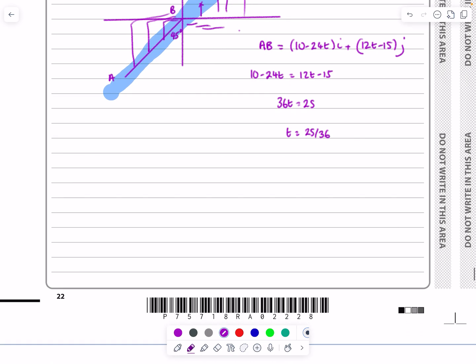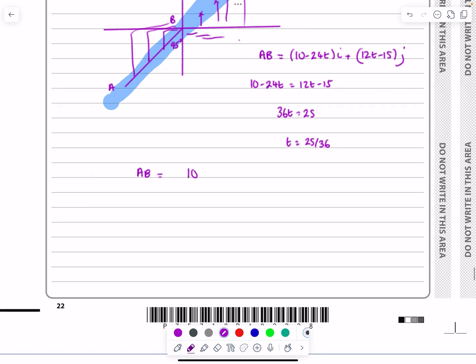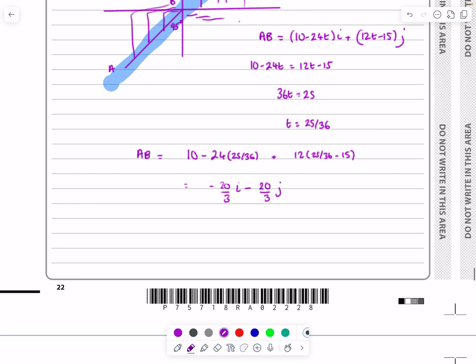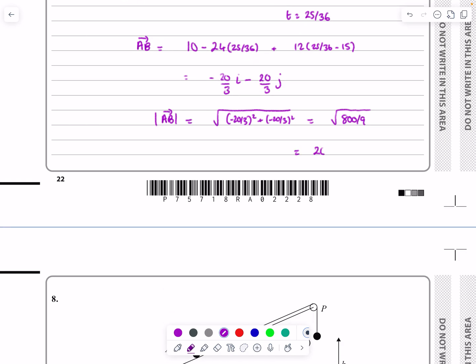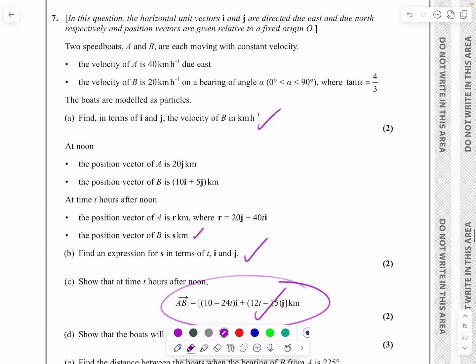That's not what they want - they want the distance. So that's now putting that back into the formula for the distance. So (10 minus 24 × 25/36)I plus (12 × 25/36 minus 15)J. That works out to be minus 20 over 3I minus 20 over 3J. Then I need to work out the length of that vector. Square root of (minus 20/3)² plus (minus 20/3)². That works out to be square root of 800/9, which is 20 root 2 over 3. Really big question, really lots of stuff to go through there, but hopefully that all makes sense.